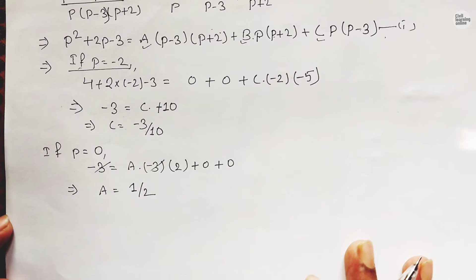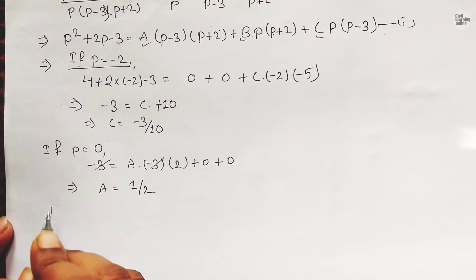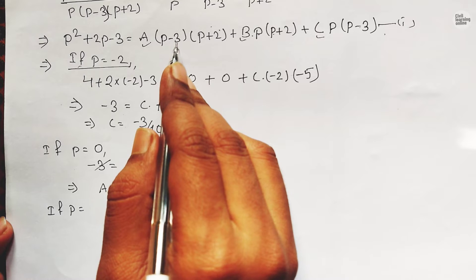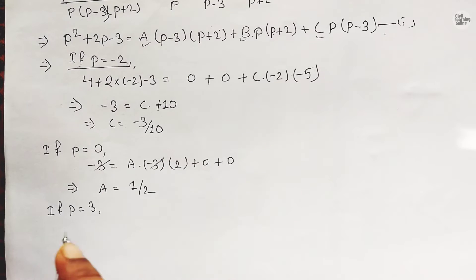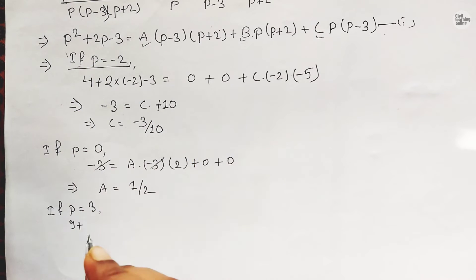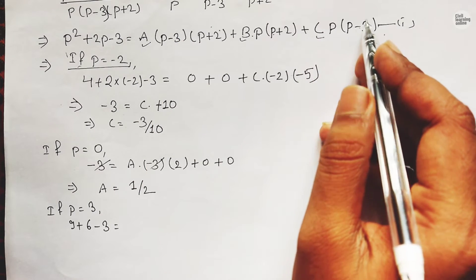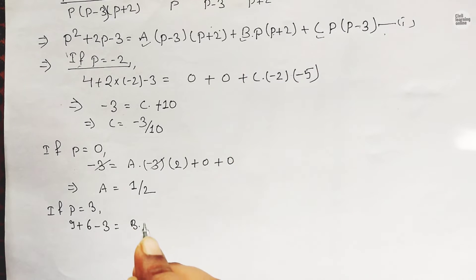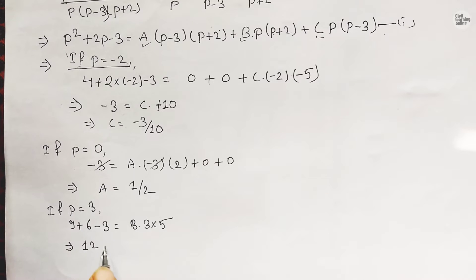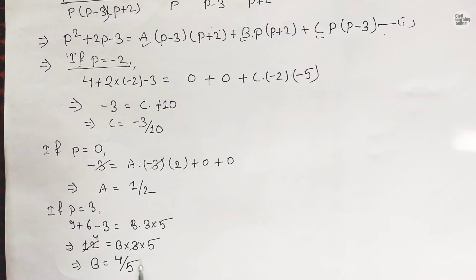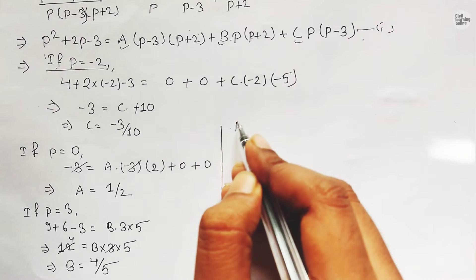To find B, we assume p = 3. Substituting: 3² + 2(3) - 3 = 9 + 6 - 3 = 12, and only the B term remains: B(3)(3 + 2) = B(3)(5) = 15B. So 12 = 15B, giving B = 4/5.